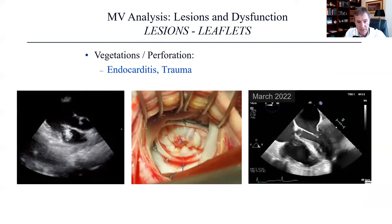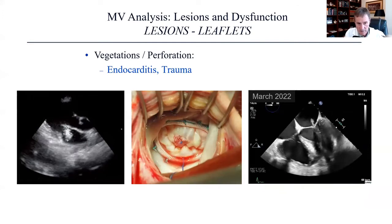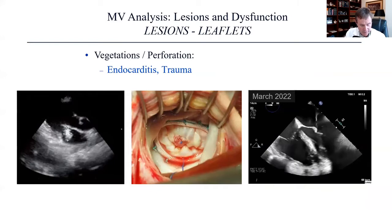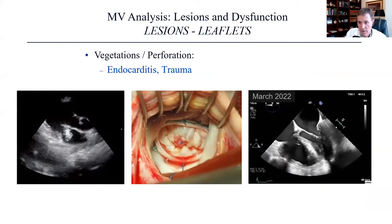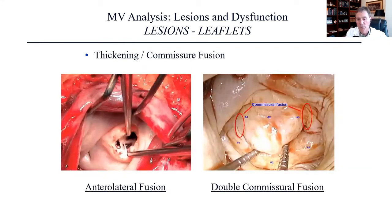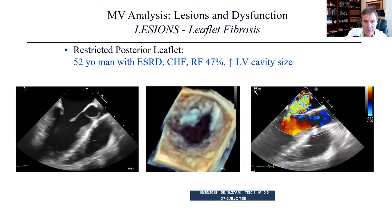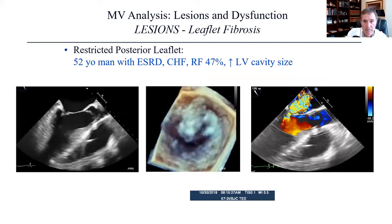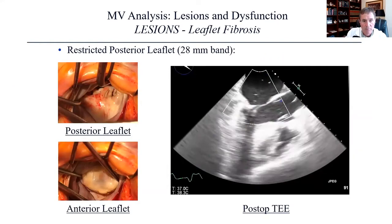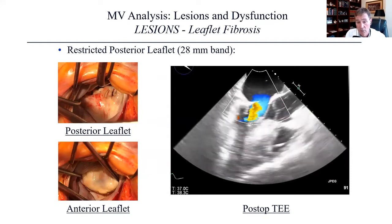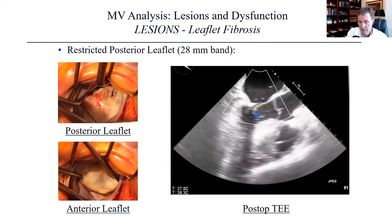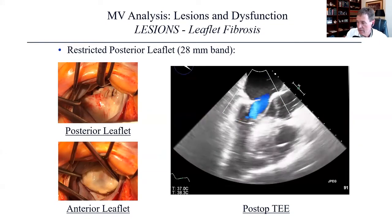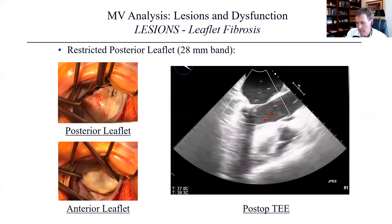For vegetations and perforations, here's a vegetation case where we resected out the involved portion of the leaflet. Anterolateral fusion or double commissural fusion occurs with rheumatic change or calcification, and commissurotomy is what we would do to address this. For fibrosis of the leaflet, here's a restricted posterior leaflet in a 52-year-old gentleman with end-stage renal disease causing quite severe regurgitation. While the posterior leaflet was fibrotic, his anterior leaflet was quite normal, so we put in a downsizing band and eliminated his regurgitation — ideal in a patient with end-stage renal disease because we avoided putting in a tissue valve or dealing with anticoagulation from a mechanical valve.